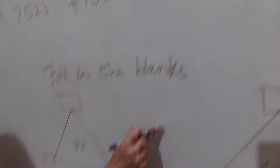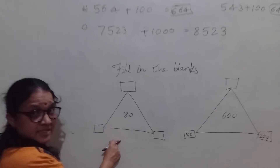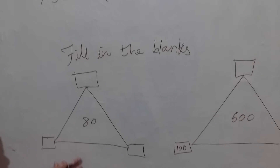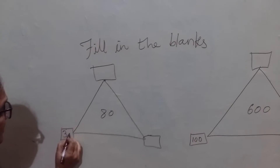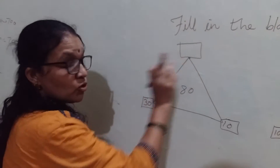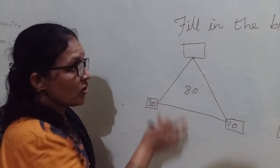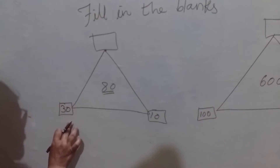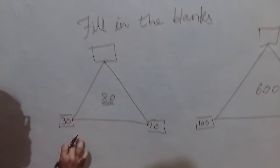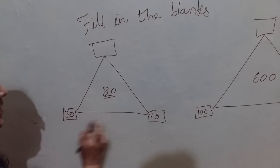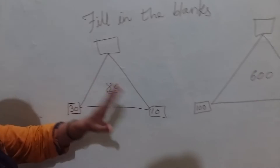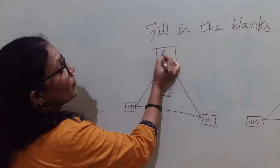Now see here — fill in the blanks. Can you recognize this shape? This is a triangle shape. A triangle has three corners. Here, I have written 30 and 10 at two corners. The number in the middle is the sum of the three corners. 30 plus 10 is 40. So the missing corner is 40.